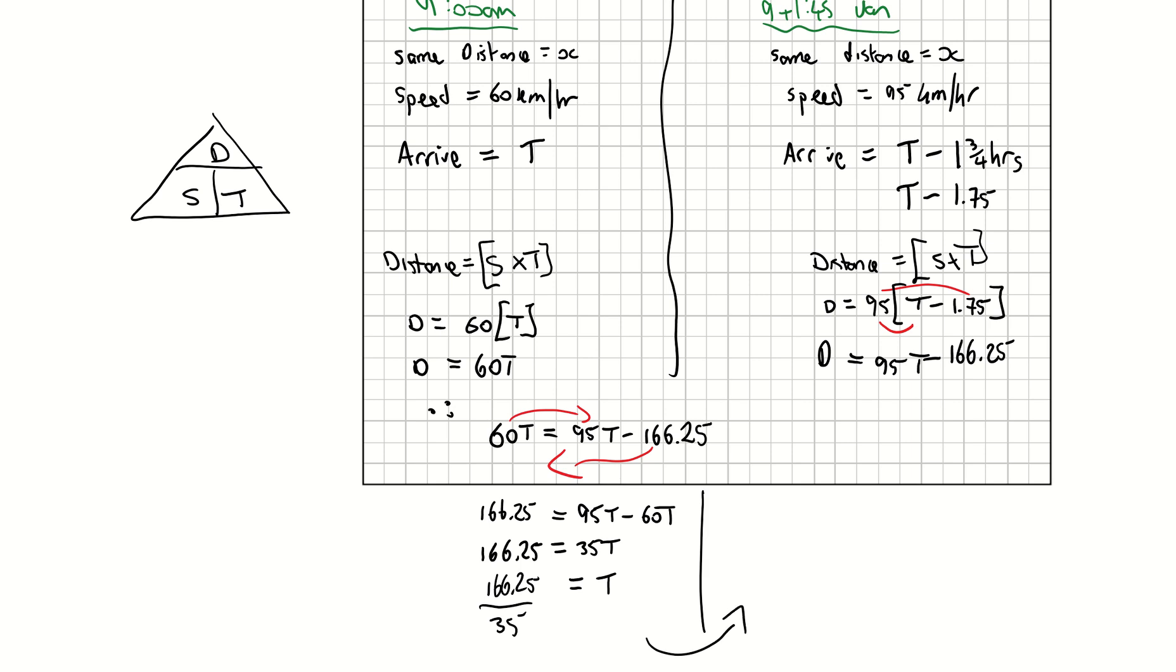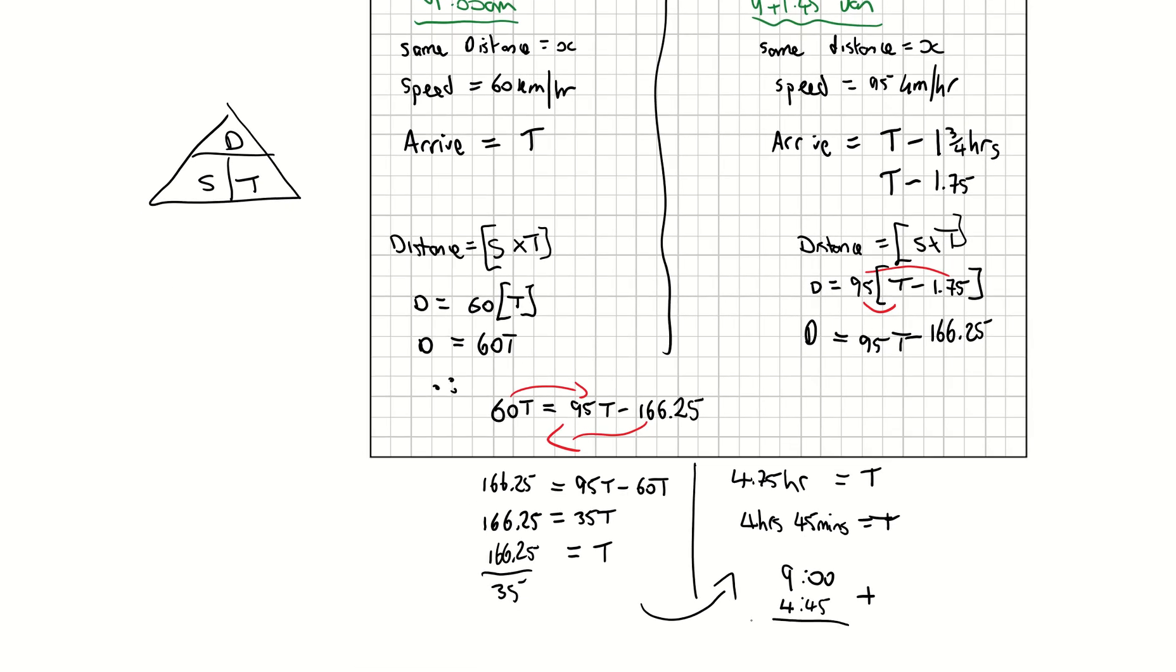That is giving me T or time as 4.75. Now, this is time in hours. So 4.75 hours, which is four hours and three quarters of an hour is 45 minutes. Remember what's happening here. My first van left at 9 a.m. in the morning and it travels four hours, 45 minutes. The question is asking us to find what time they both arrive. So I need to now add on four hours, 45 minutes. So the vans are going to arrive at their destination at 13.45 or 1.45 p.m.